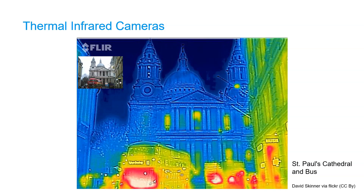There are also thermal infrared cameras that you're probably more familiar with. Like with normal cameras you take a picture of an object and it will create an image, but it uses a thermal infrared band to give an indication of the temperature of the object that you're looking at. Also these images need to be corrected for the emissivity of the objects. In this example you can see that the motors of vehicles are warmer than the environment, and also you can see the energy leakage from windows.